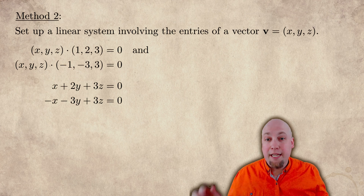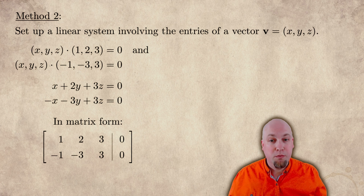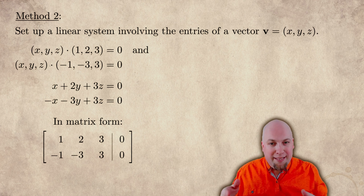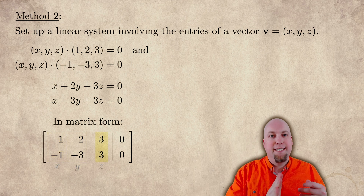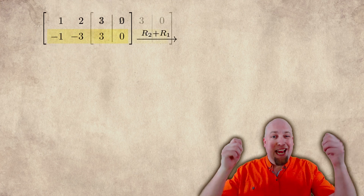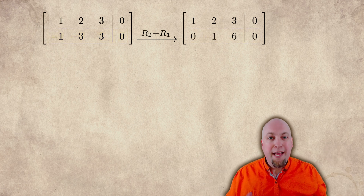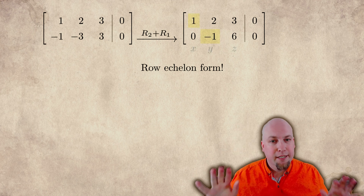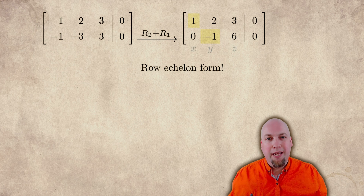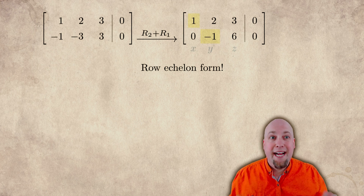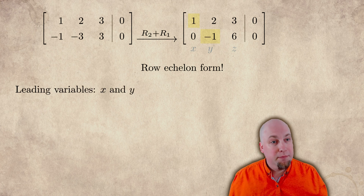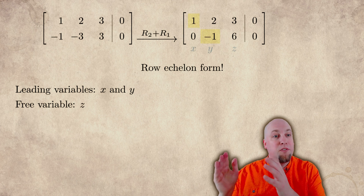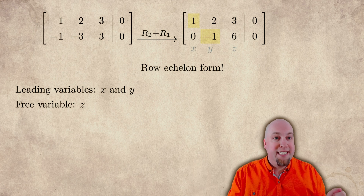I can take this linear system and just throw it into matrix form. It corresponds to the augmented matrix [1, 2, 3 | 0] and [-1, -3, 3 | 0]. The rows correspond to equations and the columns correspond to variables x, y, and z in that order. I'm going to apply row reduction to put it in row echelon form. If I just add that first row to the second row, I get a zero in the bottom left corner and it's now in row echelon form. I have a nice diagonal pattern of leading entries. You'll notice this linear system has a free variable — there's no leading entry in the third column, the z column. So z is a free variable, while x and y are leading.